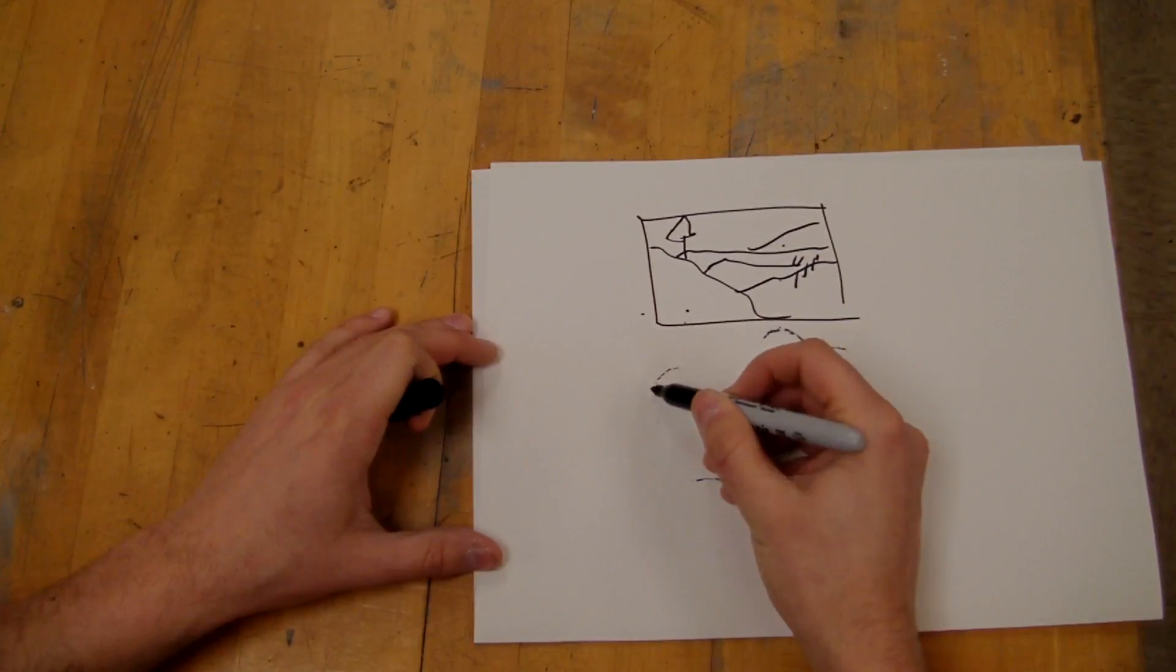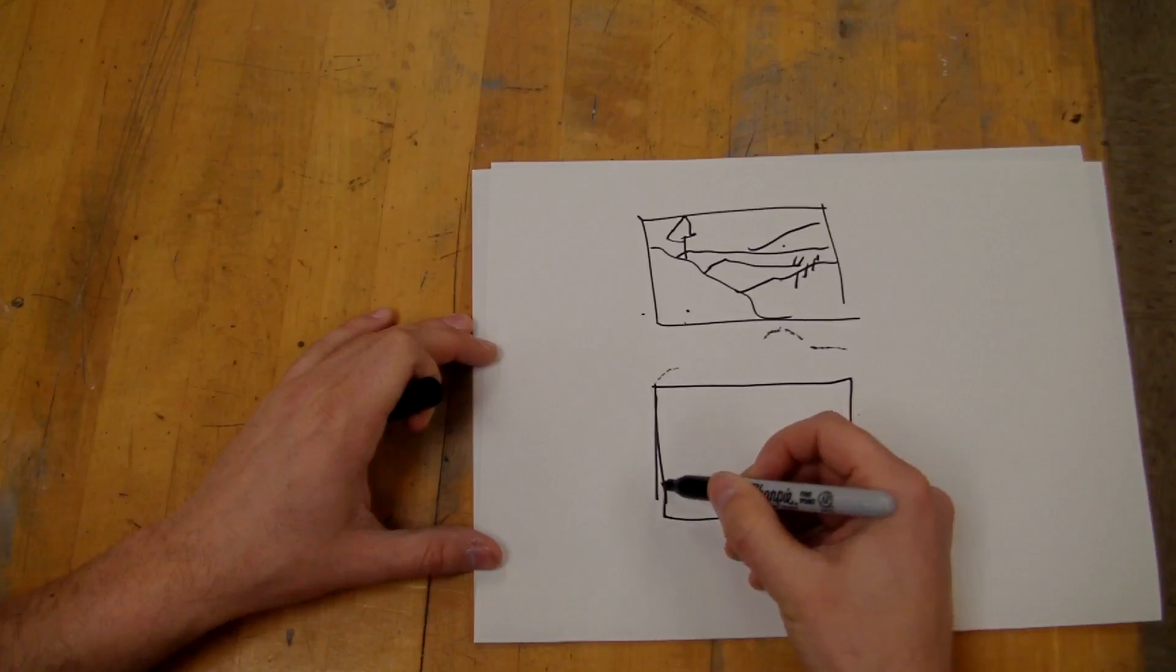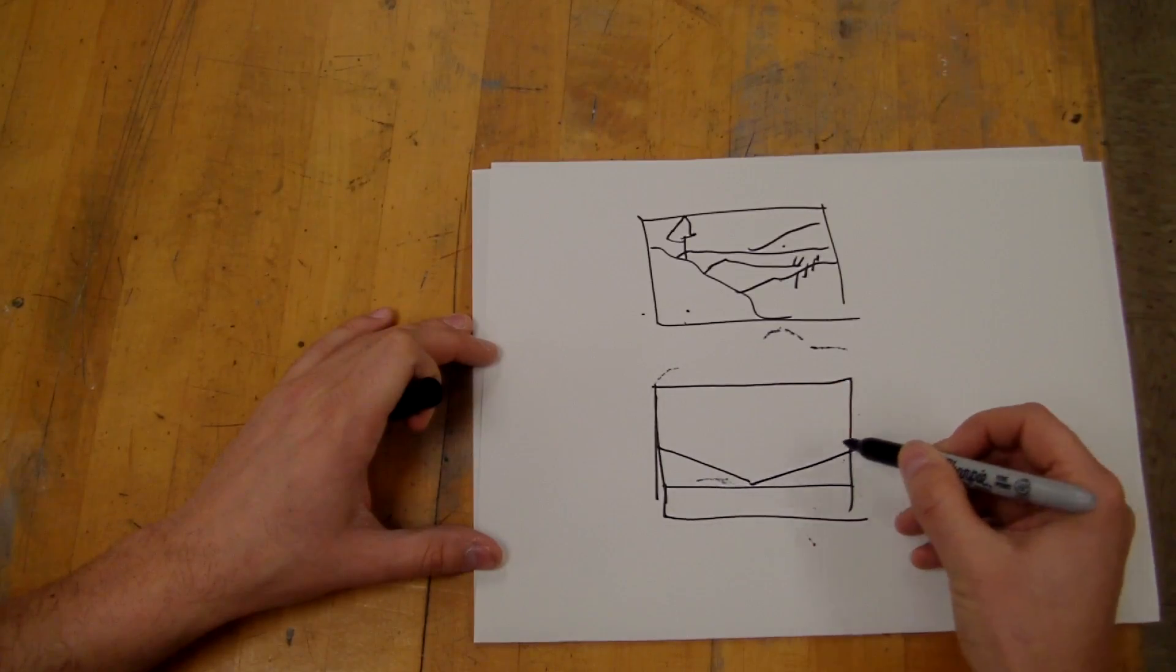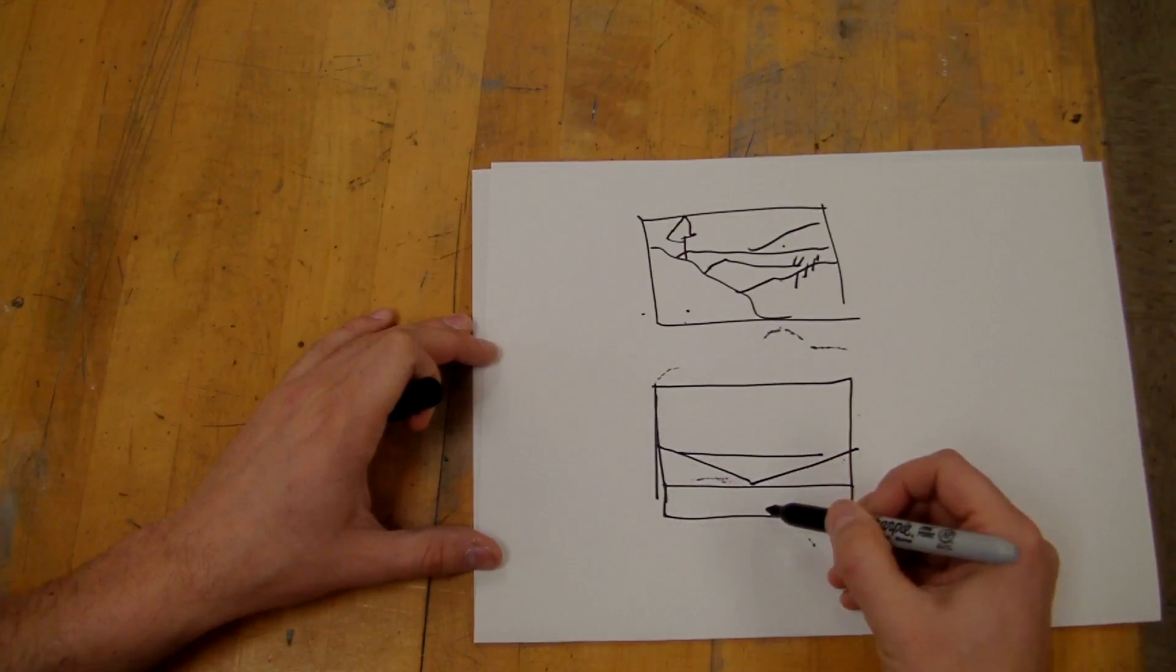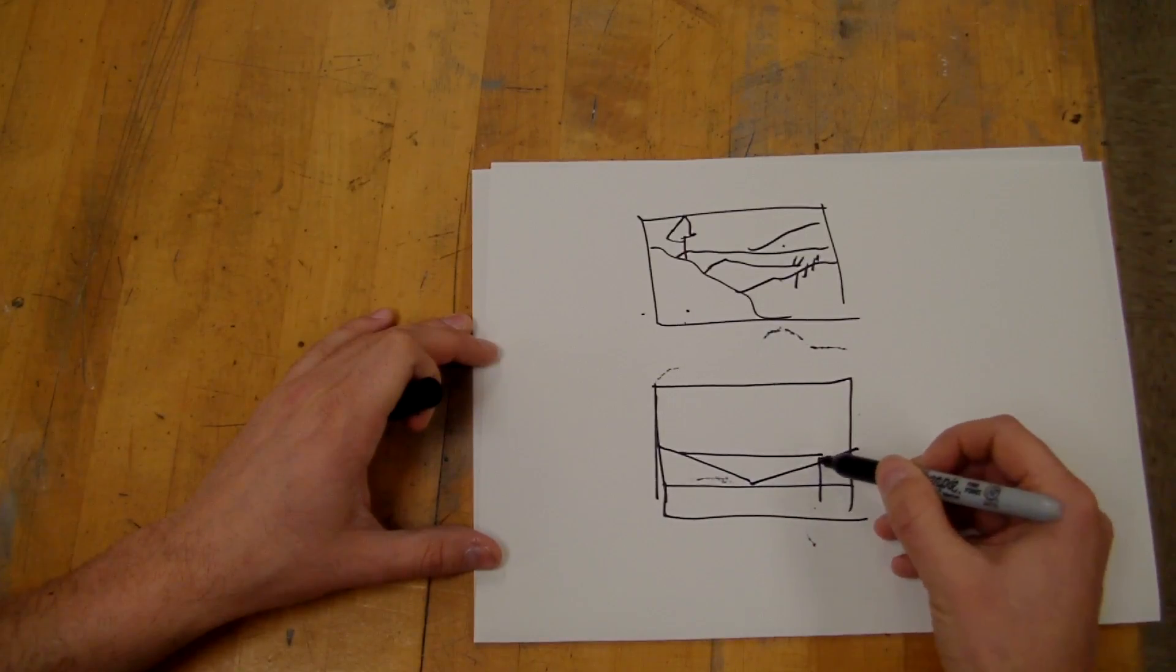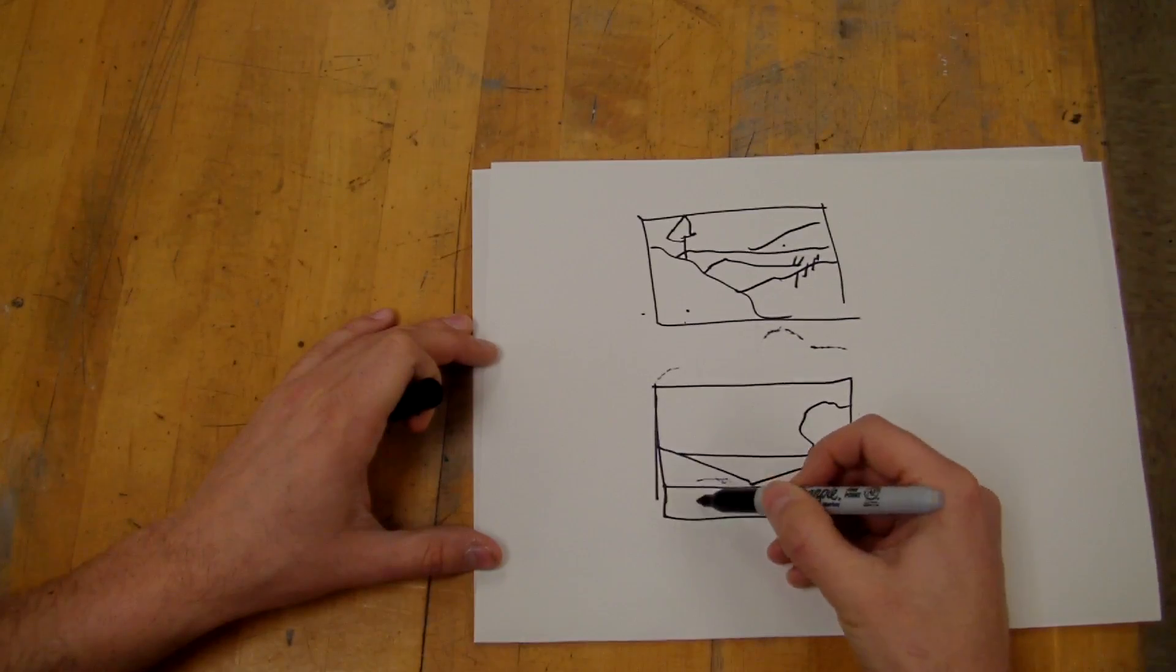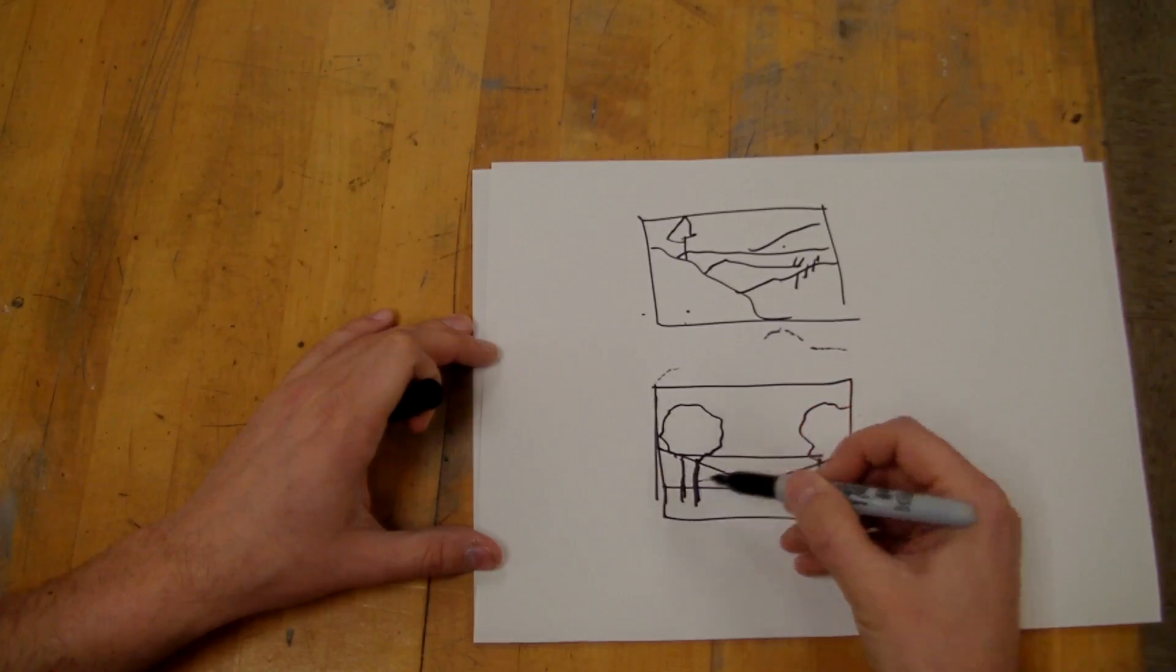What I would do with the ones that we're going to be doing is maybe making it more like this. So there's still a foreground, middle ground, background. Maybe I'll put a tree over here, but they are going to have to be symmetrical. So whatever you do to one side, you have to do to the other side.